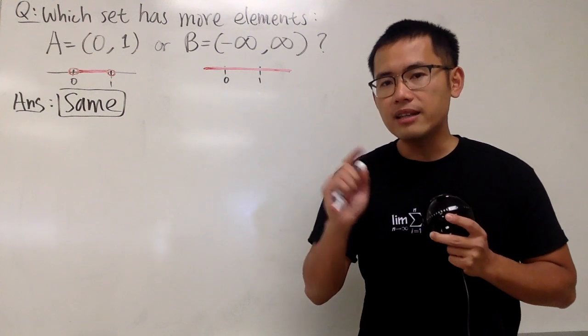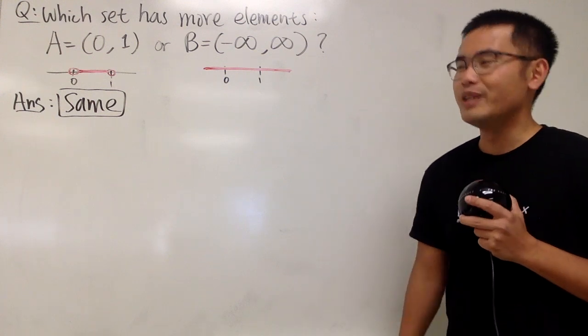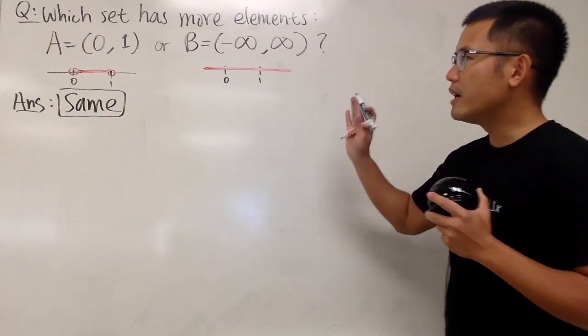Over there, that's called the countable infinity. Right here when we're talking about real numbers, unfortunately we cannot count, but the concept is still going to be the same. Here is the deal.